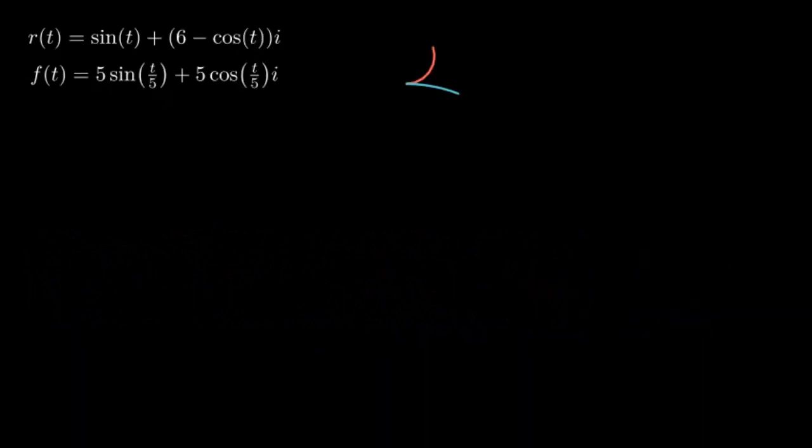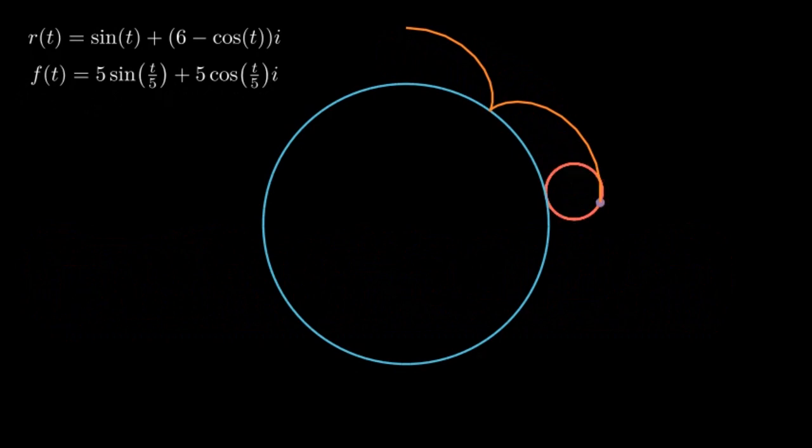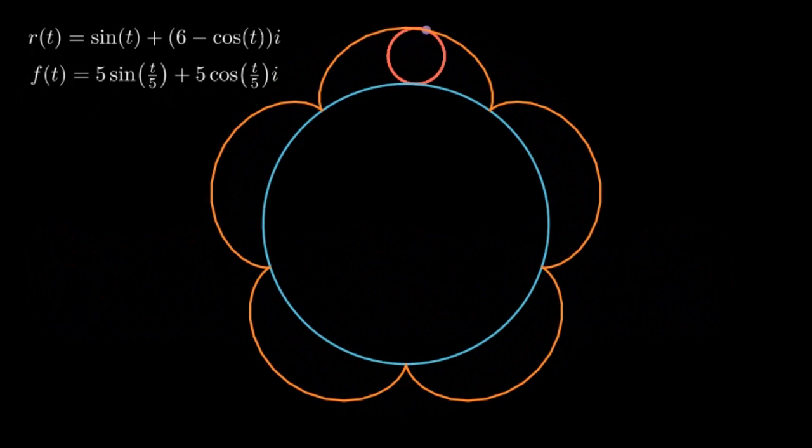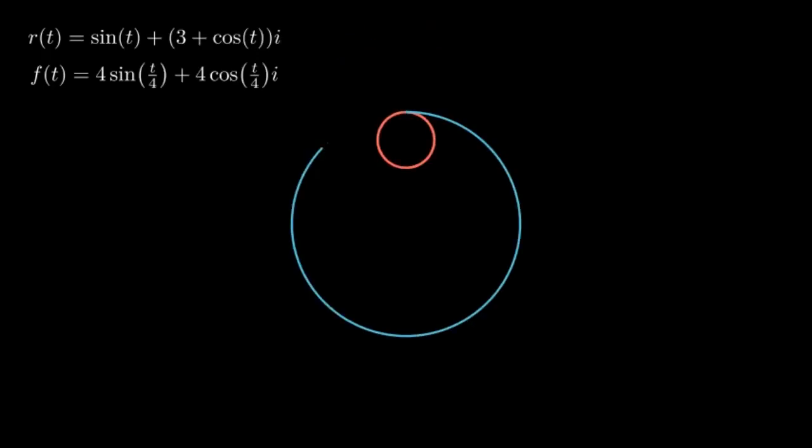We can also use this formula to generate cycloids, epicycloids, hypocycloids, and catenaries, albeit in a more complicated manner than geometrically deriving each of them. Here, I have shown the parameterizations of R and F for an epicycloid and for a hypocycloid.